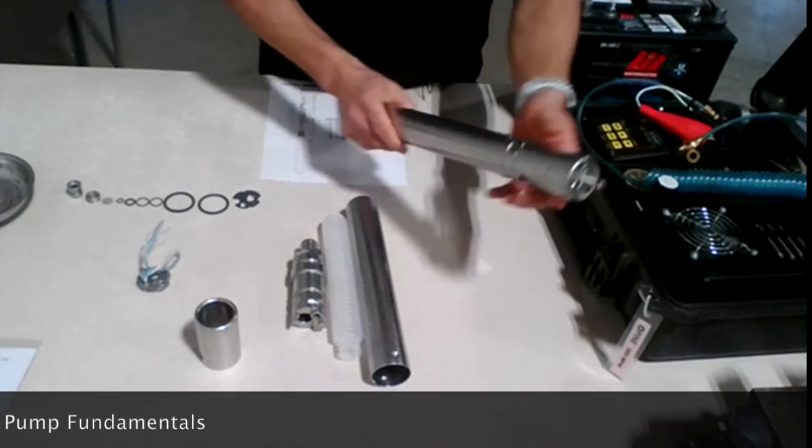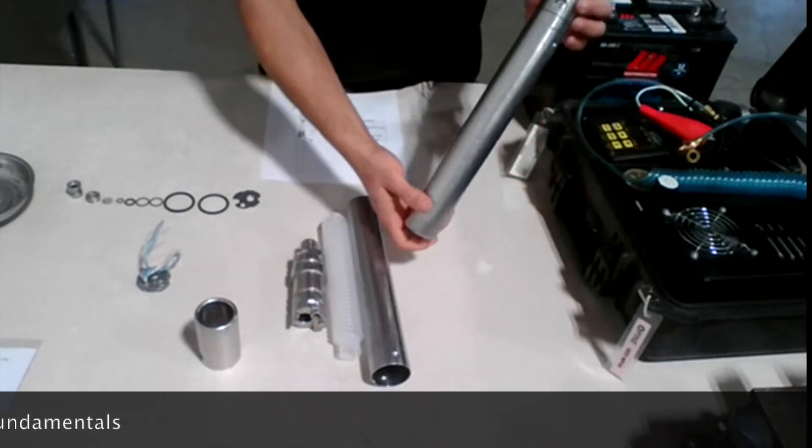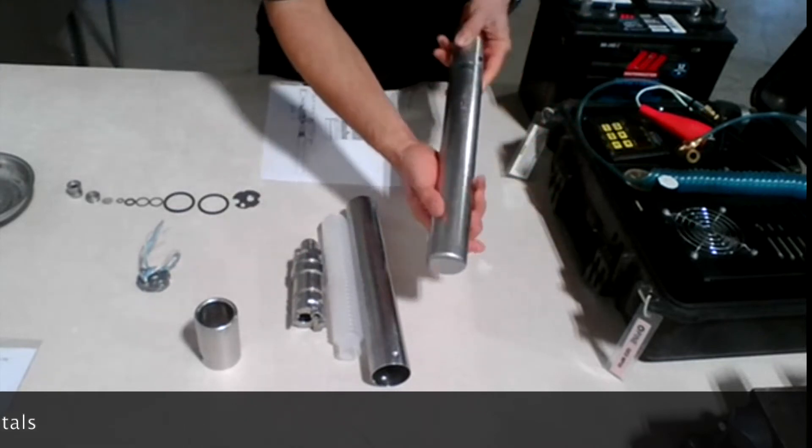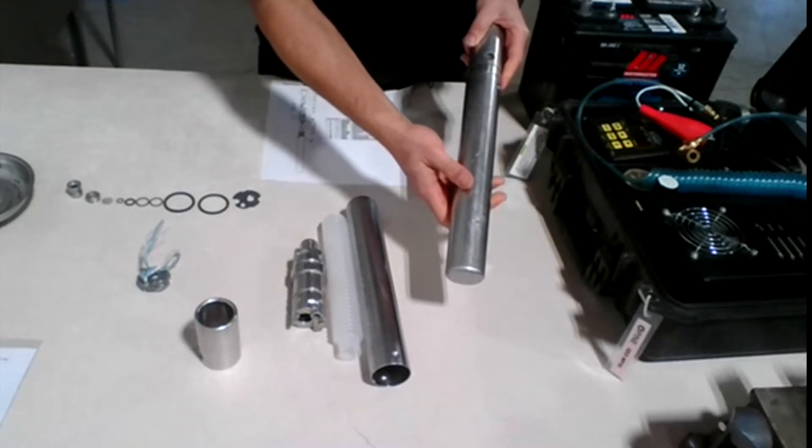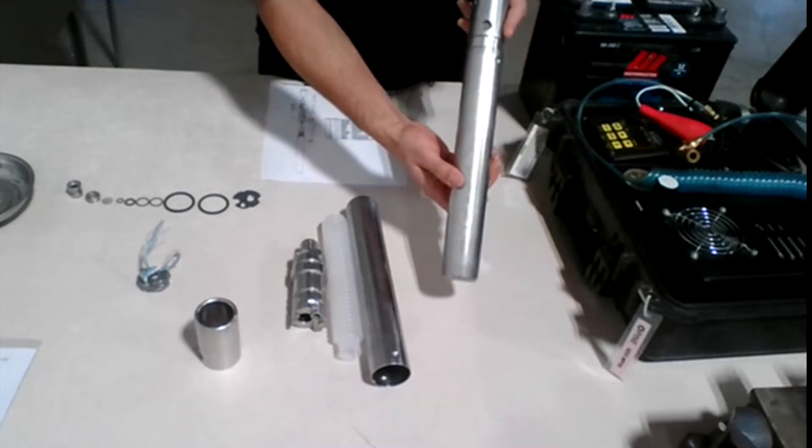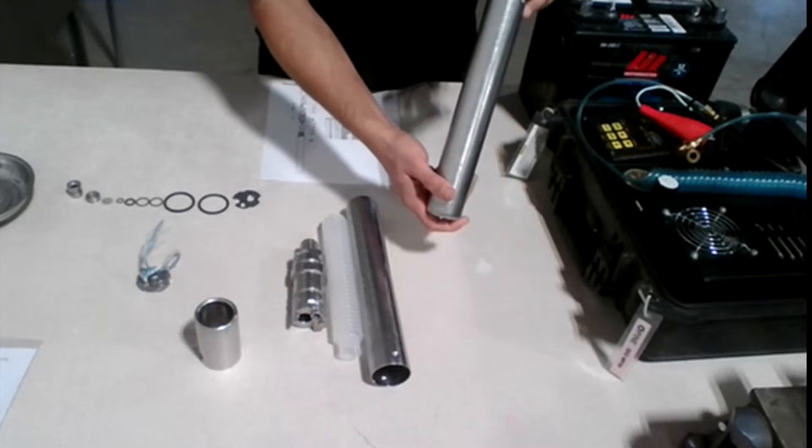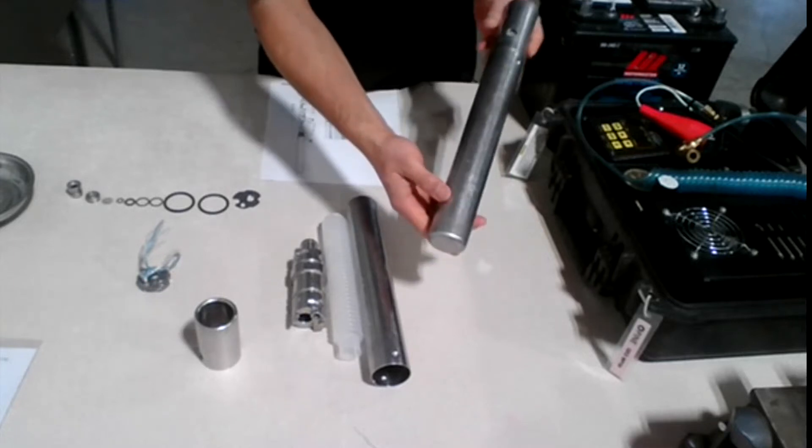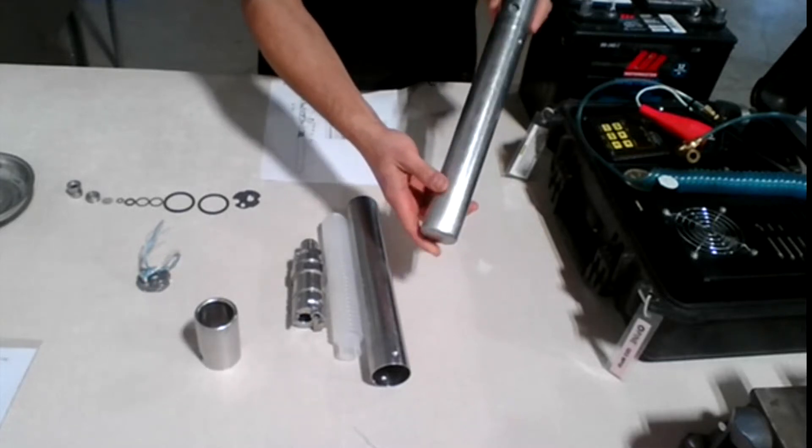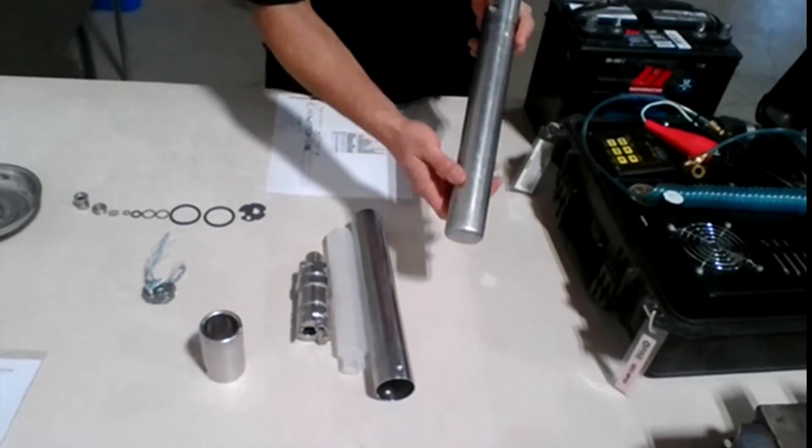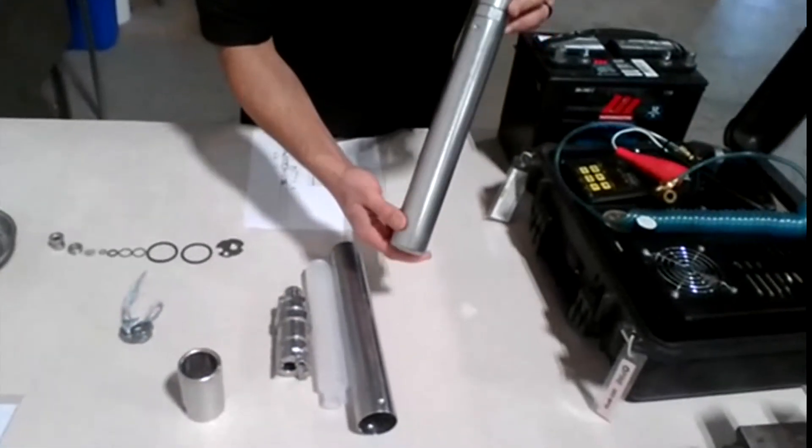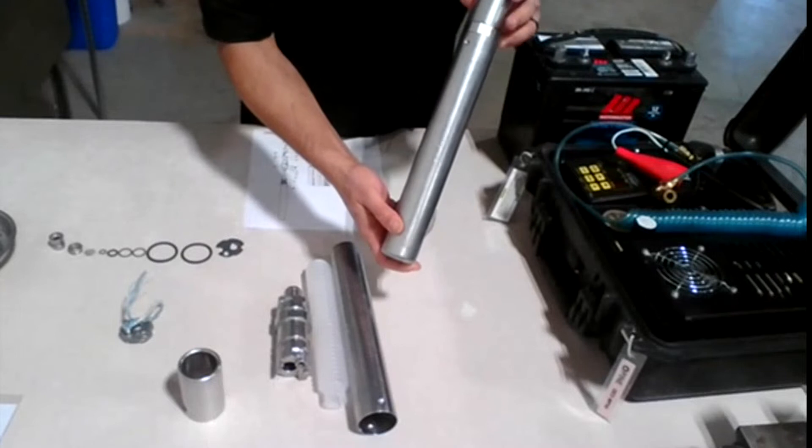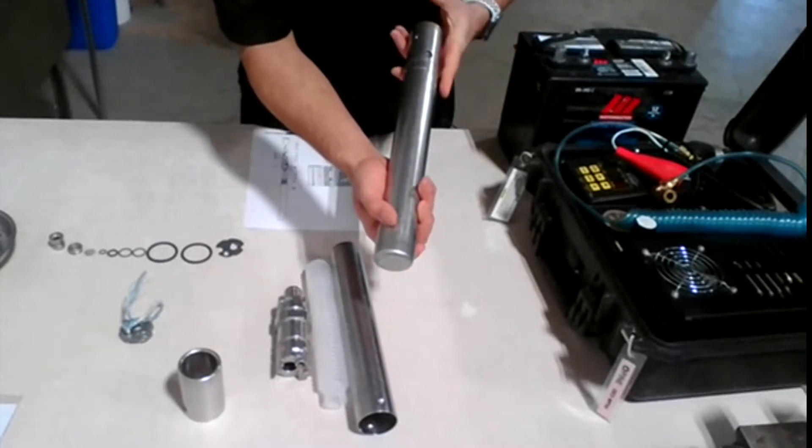As you can see, the construction of the bladder pump itself. This bladder pump is from QED manufacturer. So it's made from 303 grade stainless steel that is very durable. And actually, this steel protects against chloride and any groundwater chemicals that could be there.